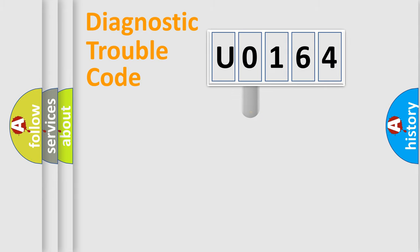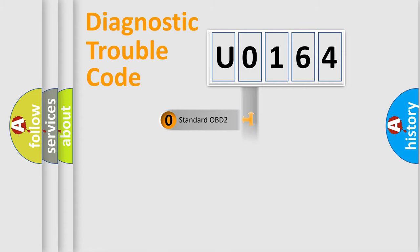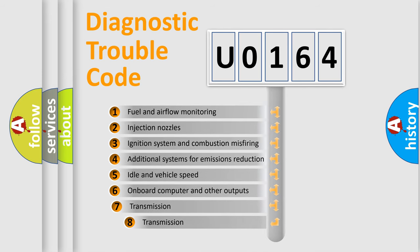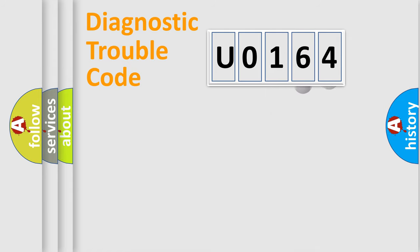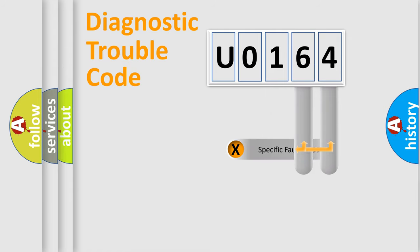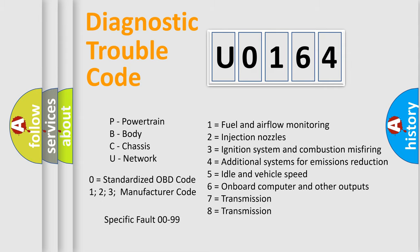This distribution is defined in the first character code. If the second character is expressed as zero, it is a standardized error. In the case of numbers 1, 2, 3, it is a more specific expression of the car-specific error. The third character specifies a subset of errors. The distribution shown is valid only for the standardized DTC code. Only the last two characters define the specific fault of the group. Let's not forget that such a division is valid only if the second character code is expressed by the number zero.